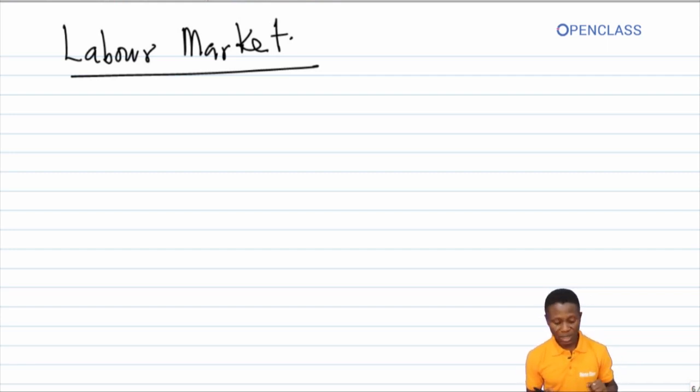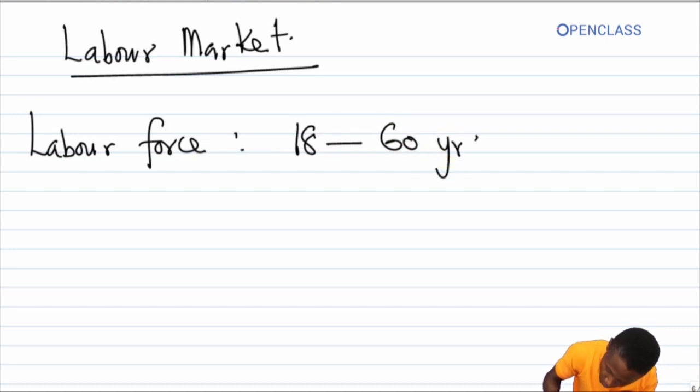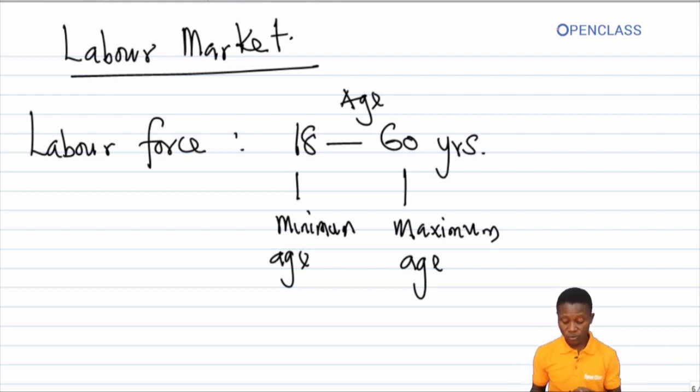In Nigeria, the labor force falls within the age of between 18 to 60 years. This is the minimum age; here is the maximum age. Anybody below 18 in Nigeria is not considered as part of the labor force even though you are willing and ready to work. Anybody above the age of 60 is considered to be outside the labor force.